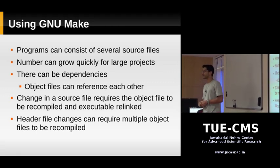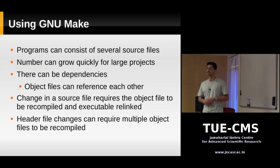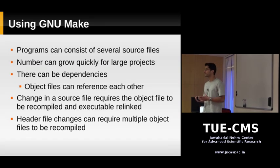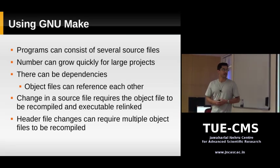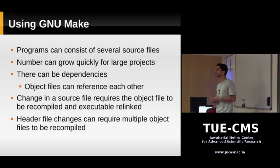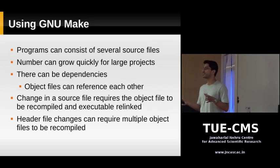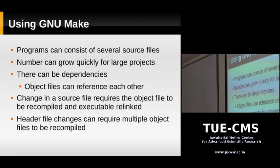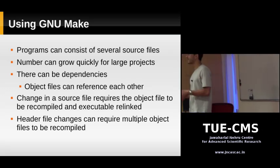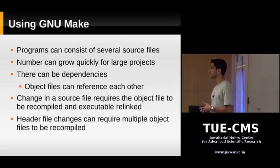So why do we need a make program? You remember we were talking about source files and creating executables and libraries from source files. A single program or project can consist of more than one source file. One source file can be referencing a function present in another source file. Each source file is compiled into an object file, and then we use a linker to link the object files together and resolve dependencies.